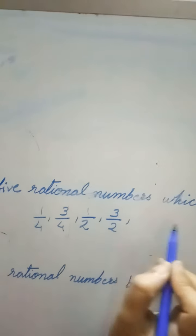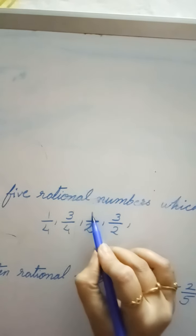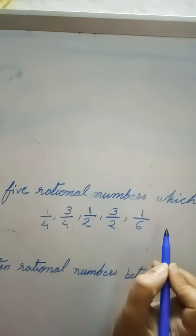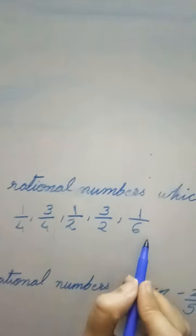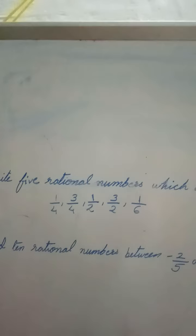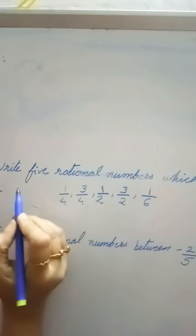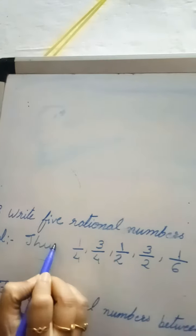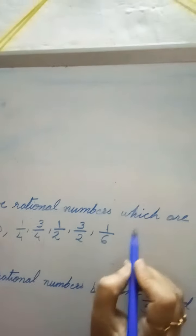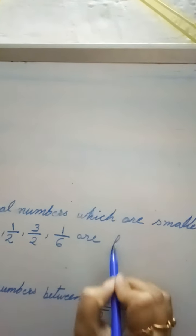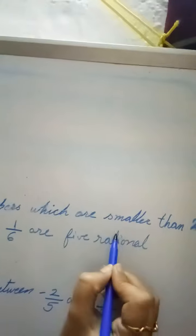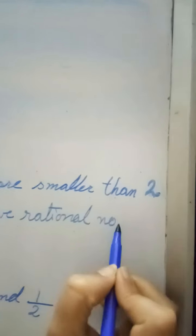Or what we can say, again smaller than 2 — it can be anything with numerator 1. So I can write here 1/6. So all 5 fractions, your rational numbers are smaller than 2. You can create your own rational numbers — think logically, that will make your work easy. Thus 1/4, 3/4, 1/2, 3/2, 1/6.